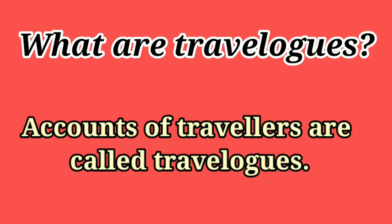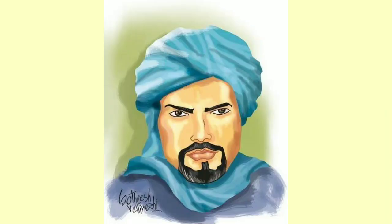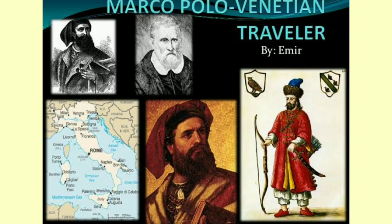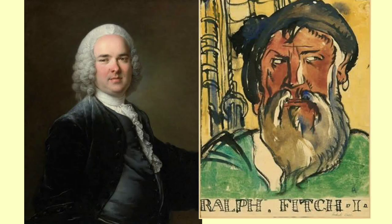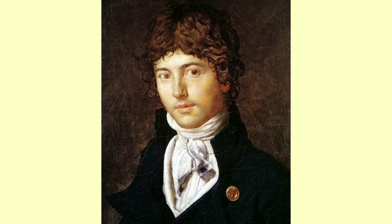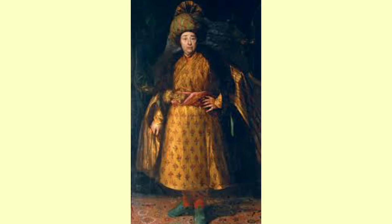Moving next to travelogues. Travelogues are accounts written by travellers. Many travellers of earlier times, like Ibn Battuta, Marco Polo, Niccolo Ralfich, Bernier and Travenier, described the social and political conditions of the country during that time period.